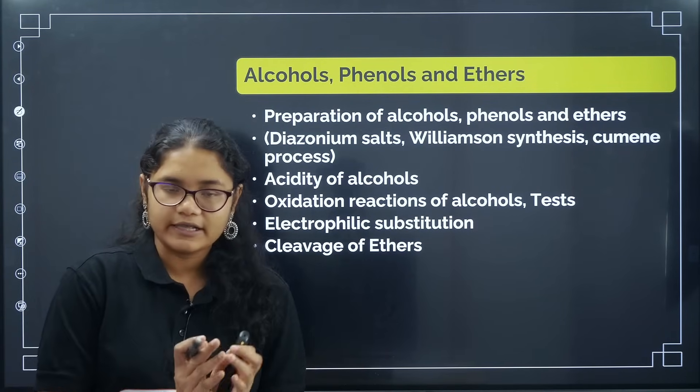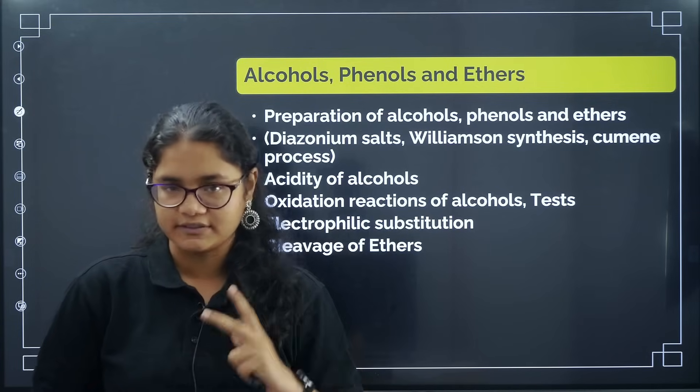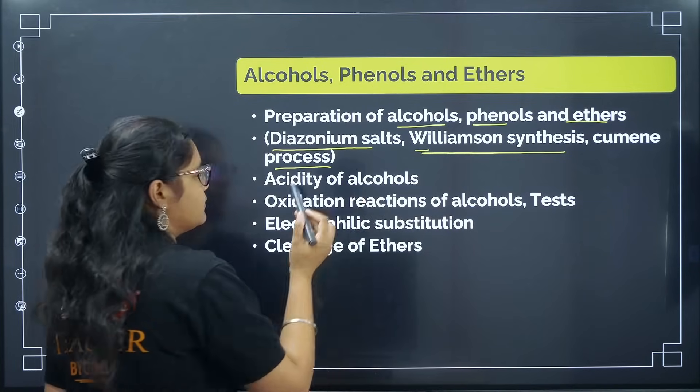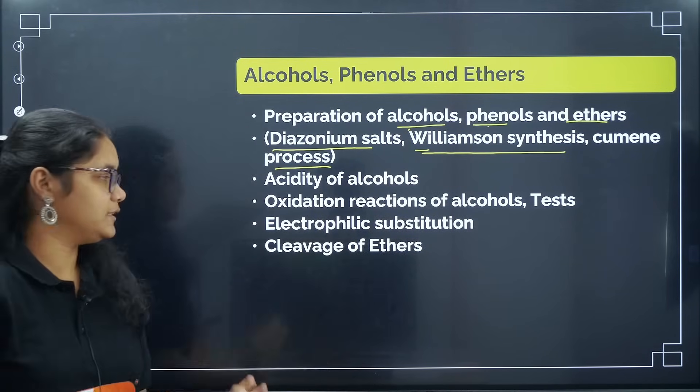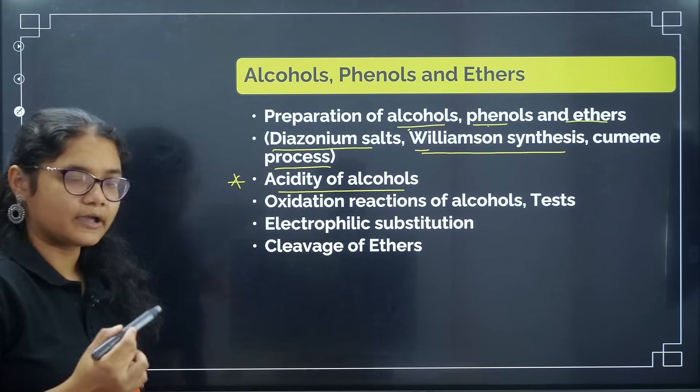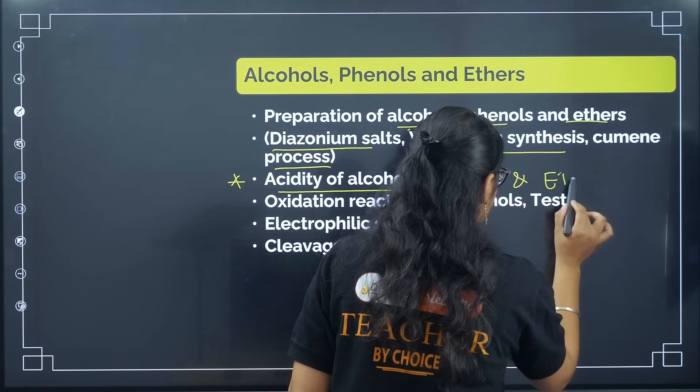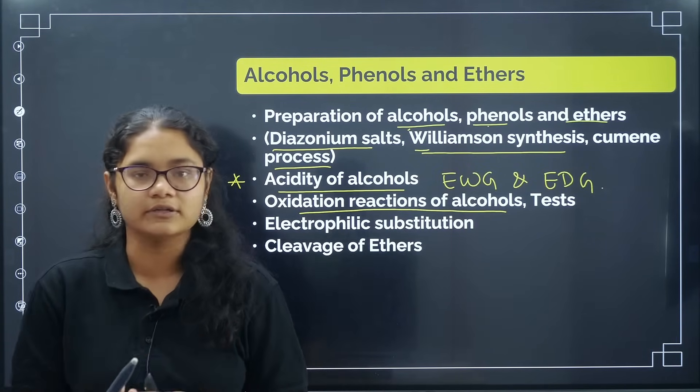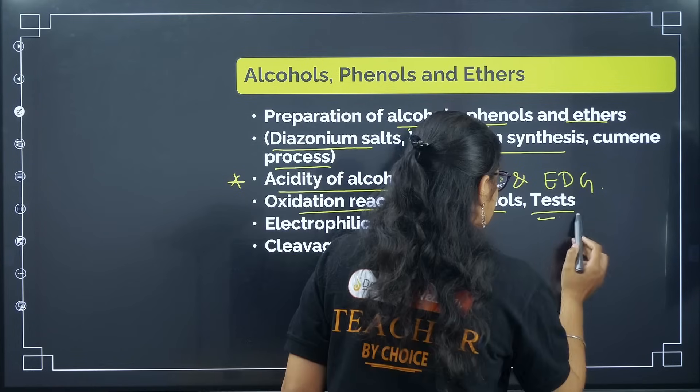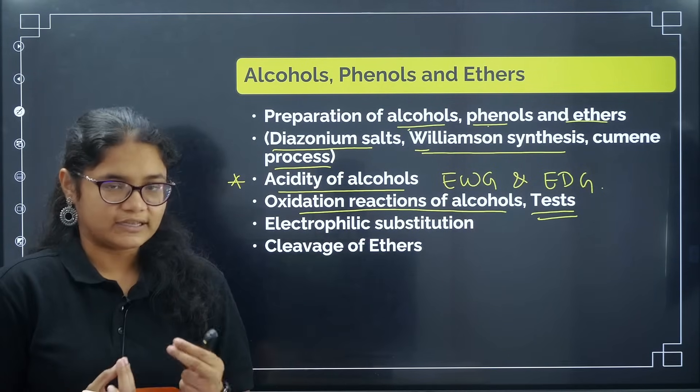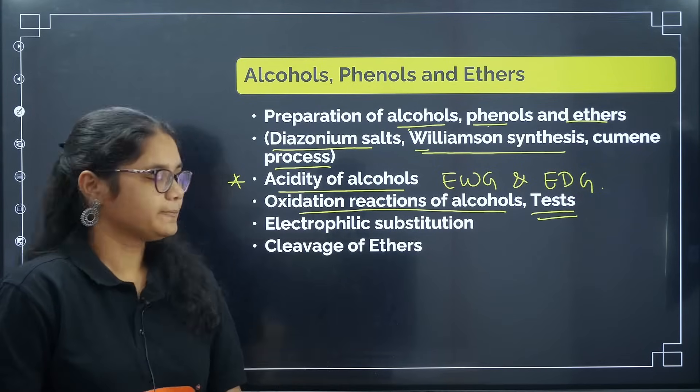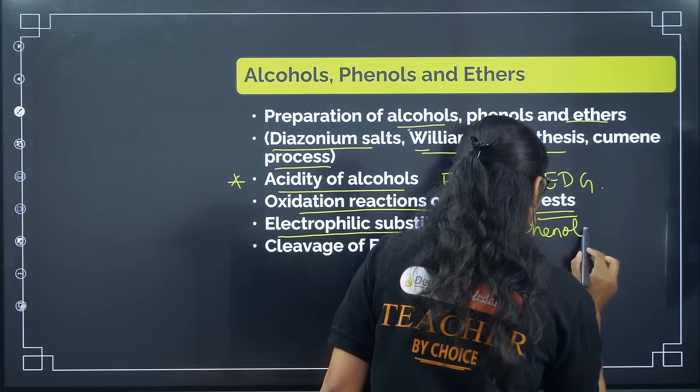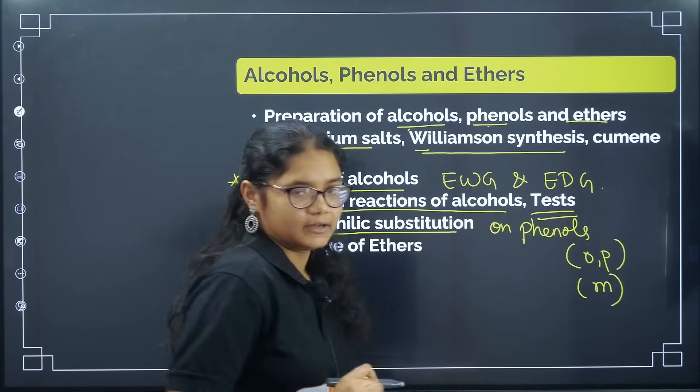Coming to alcohols, phenols, ethers - for all the organic chapters, you have to follow the same thing: preparation, chemical properties and physical properties. In preparation, important methods are diazonium salt, Williamson synthesis and cumene process. These are the important methods for preparation of phenols and ethers. Acidity of alcohols is again a very important topic - the effect of electron withdrawing group and electron donating group. Next, oxidation reactions of alcohols - primary alcohols are oxidized to what, secondary alcohols to what, tertiary alcohols in which conditions they can be oxidized. Then we have certain tests to decide between primary, secondary and tertiary like Lucas test - what is the reagent, what are the consequences for tertiary, secondary and primary. Electrophilic substitution on phenols is very important. You should know what is your ortho-para directing and which one is meta directing.